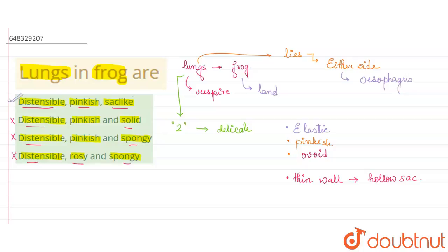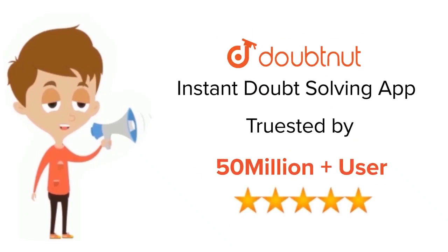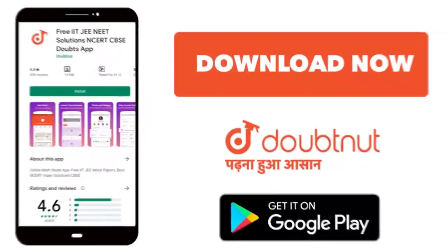Therefore the first option given here is the only correct answer. So hope this answer helps you, thank you. For class 6 to 12, IIT-JEE and NEET level, trusted by more than 5 crore students, download Doubtnut app today.